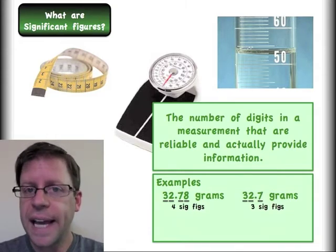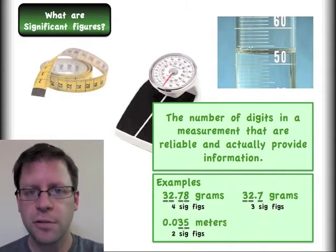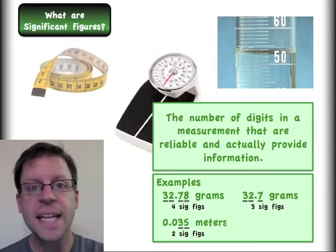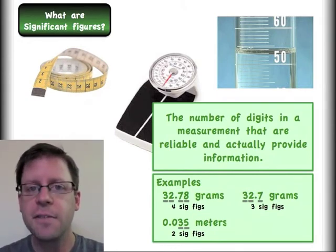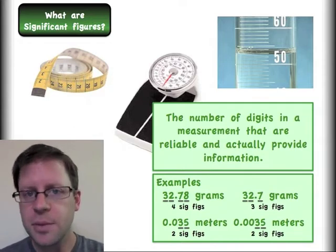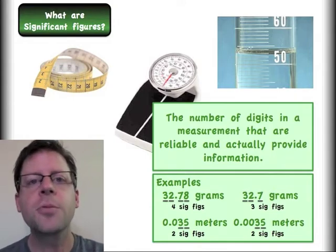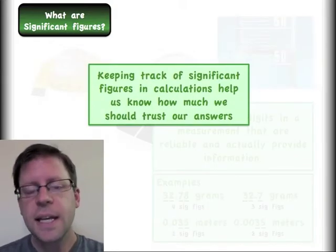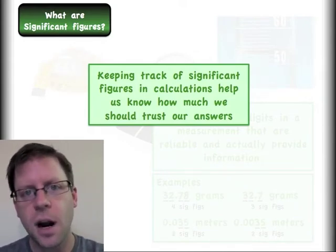However, there are some complicating factors. Sometimes digits are just placeholders. If I put this number in front of you, the two zeros out front are just holding the place of the number, meaning how big is the number. The only pieces of reliable information are the three and the five. Even if I plop another zero in between the decimal and my numbers, I still only have two significant figures. We'll talk about all the rules with that a little bit later in this video.